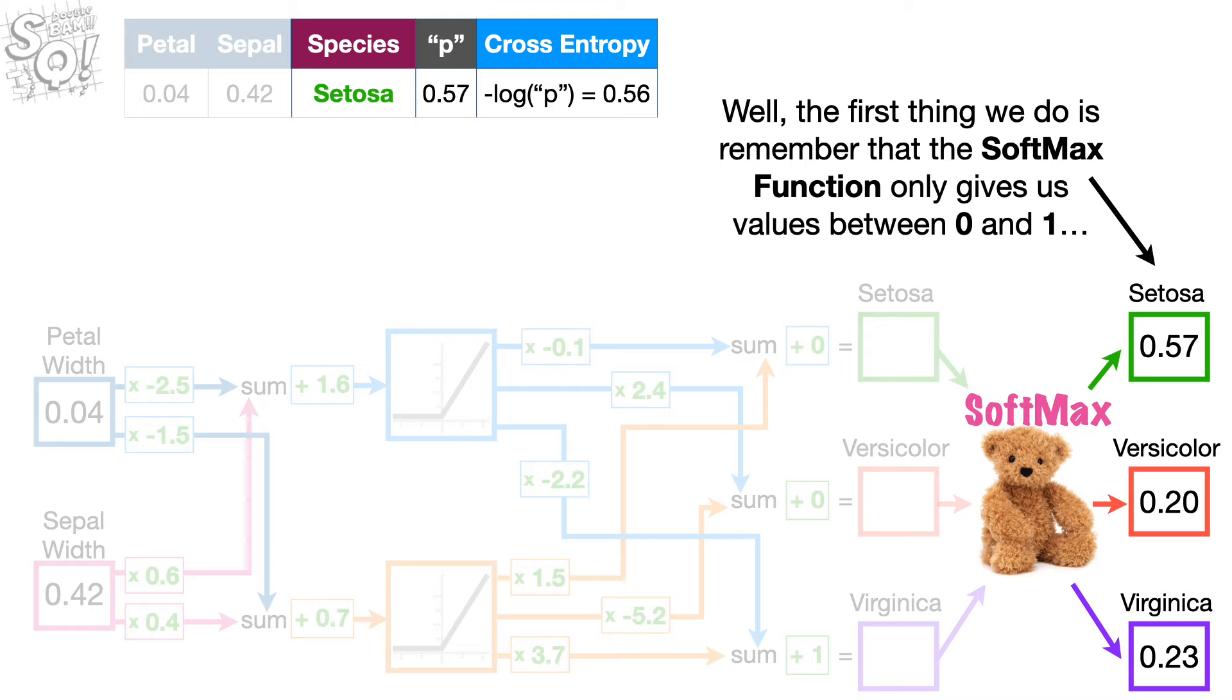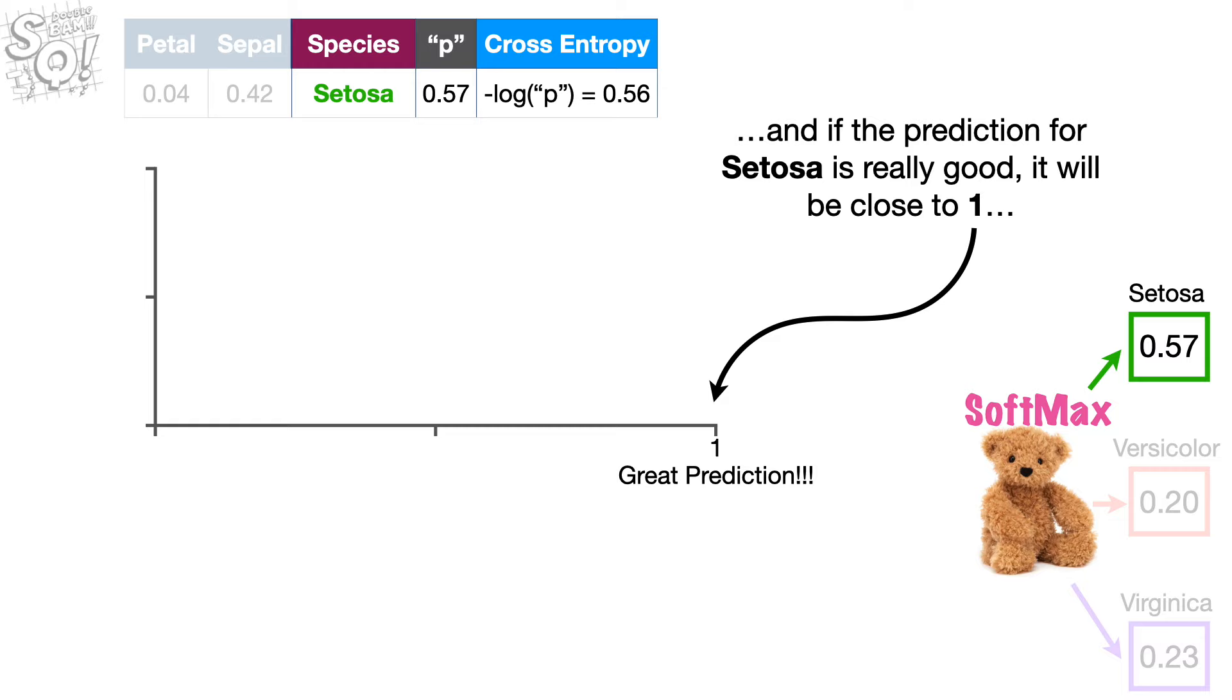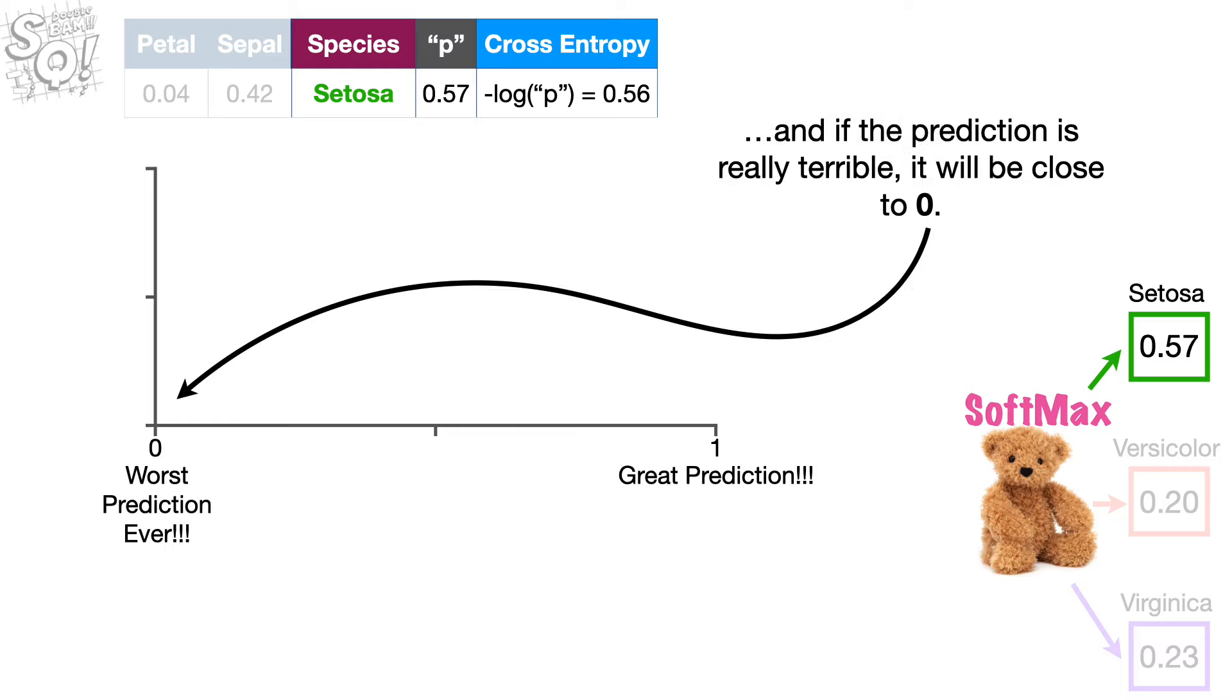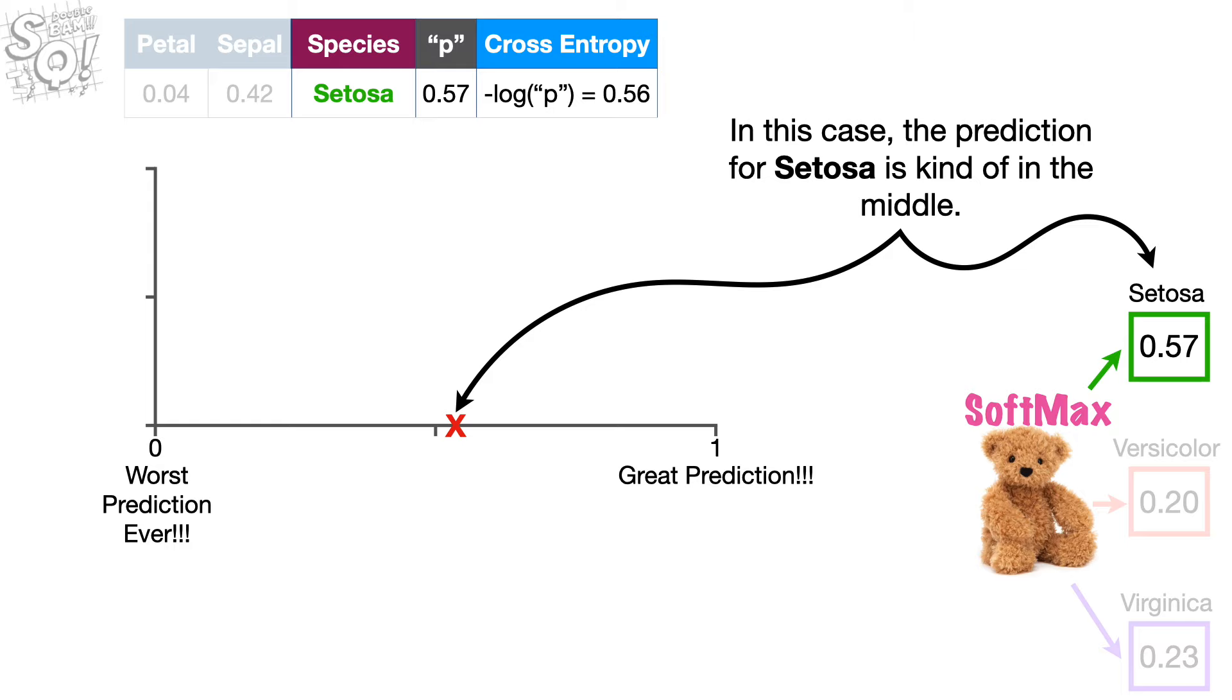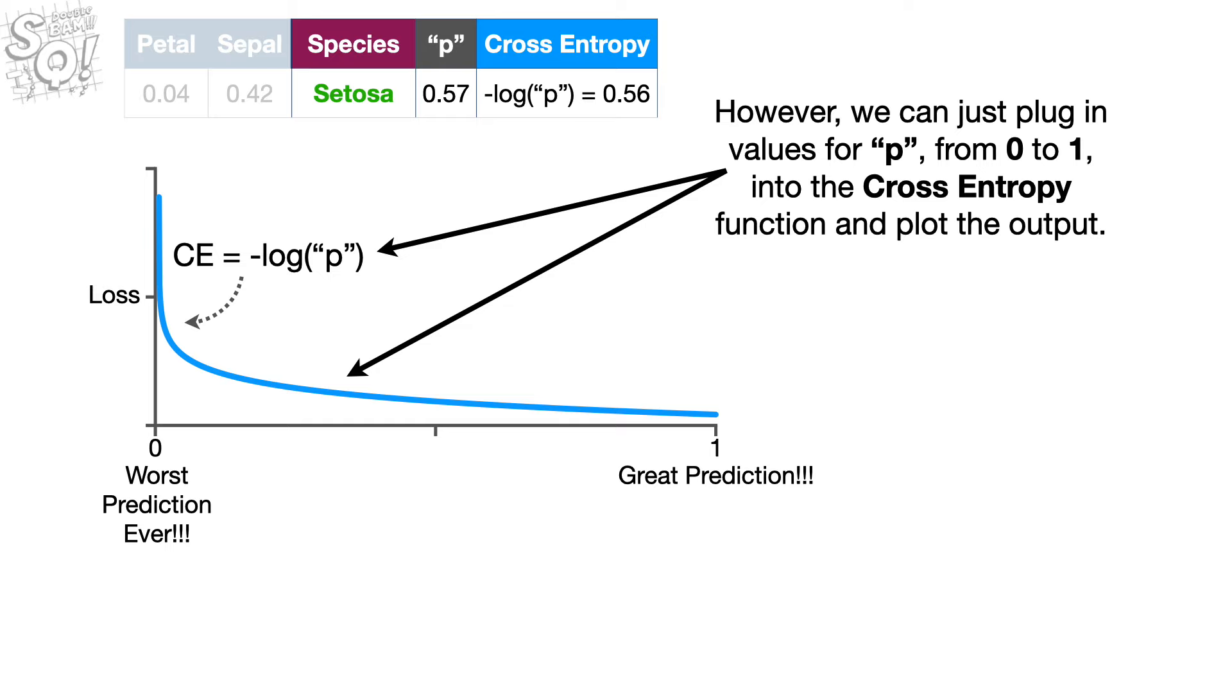Well, the first thing we do is remember that the softmax function only gives us values between 0 and 1. And if the prediction for setosa is really good, it will be close to 1. And if the prediction is really terrible, it will be close to 0. In this case, the prediction for setosa is kind of in the middle. However, we can just plug in values for the predicted probability from 0 to 1 into the cross-entropy function and plot the output.